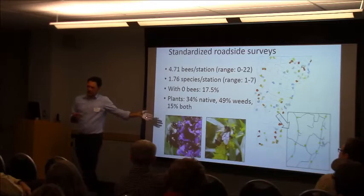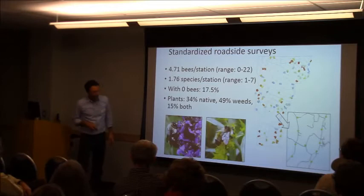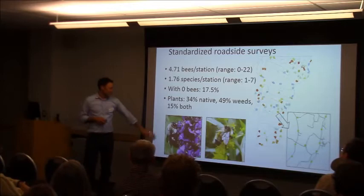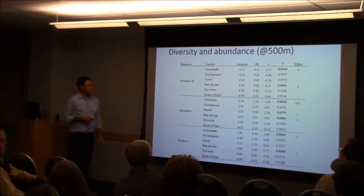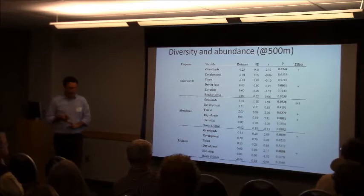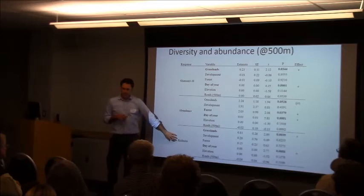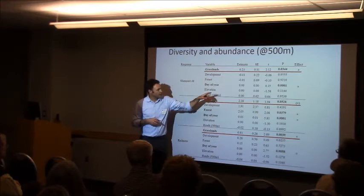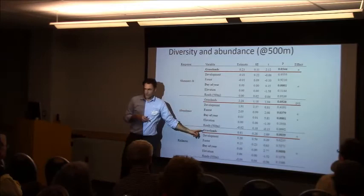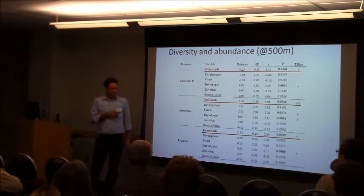Almost 20% of stations had no bees in the 10-minute time period. We looked at which plants the bees were foraging on — about a third of stations had bees only taken from native plants, and half of stations only from weeds, meaning non-native plants. This is important because we're thinking about whether we're accurately sampling the whole landscape by just looking at roadsides. We also looked at the effects of landscape metrics on diversity and abundance, using Shannon's H diversity index, simple species richness, and abundance. Grasslands are important predictors of diversity, species richness, and abundance, and forests are significant predictors of abundance.